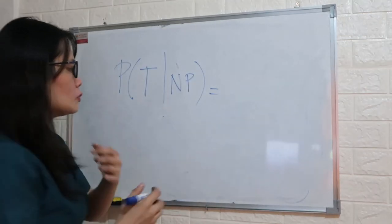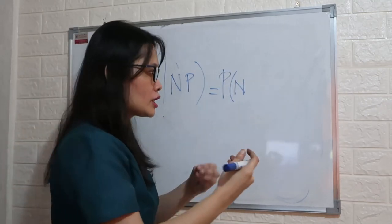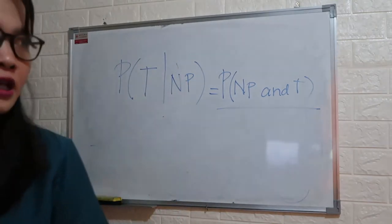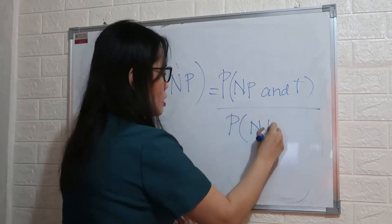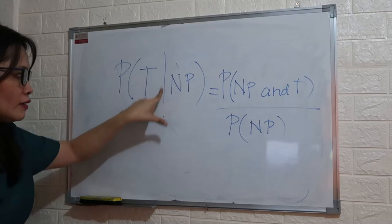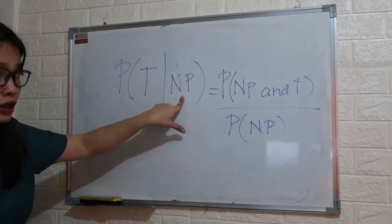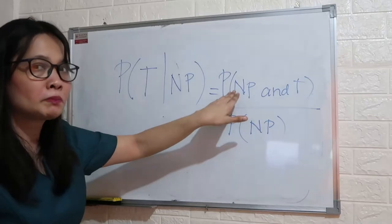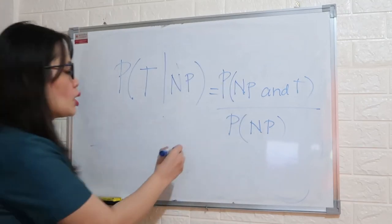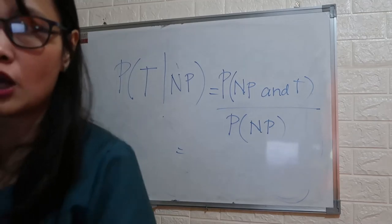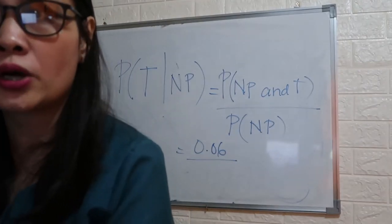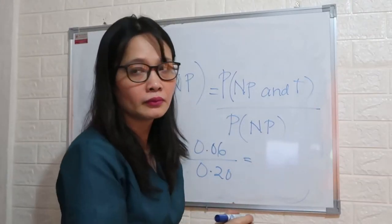To answer that: find the probability that he will get a ticket given that he has to park in a no-parking zone. That would be the probability that he parks in a no-parking zone and gets a ticket over the probability that he parks in a no-parking zone. So that is 0.06 over 0.20.